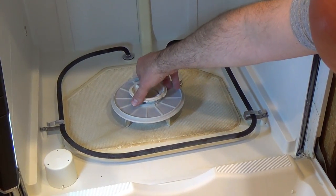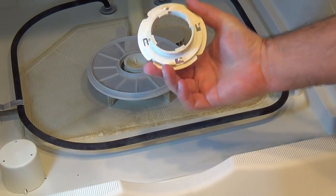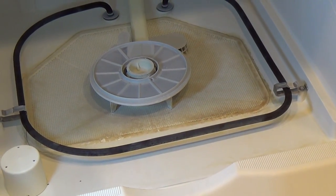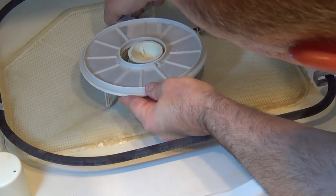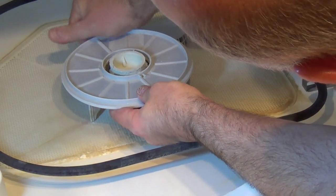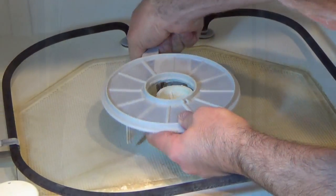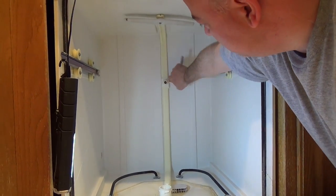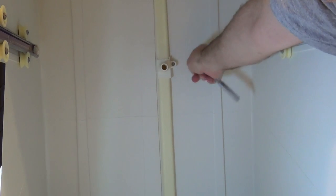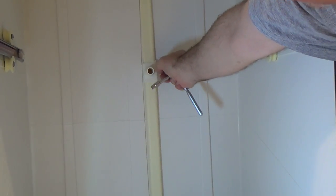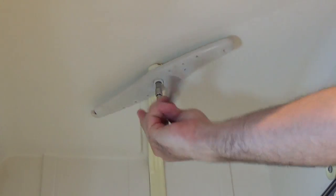To take that off, the next thing is we take this hub off, which is just counter-clockwise, take it out. And then this piece just lifts up. Take out this screw. On the top, we'll take out this screw.